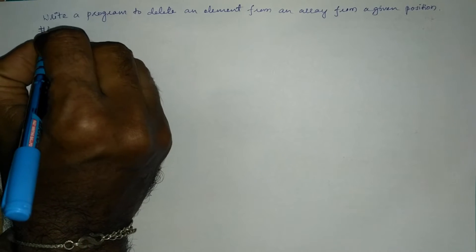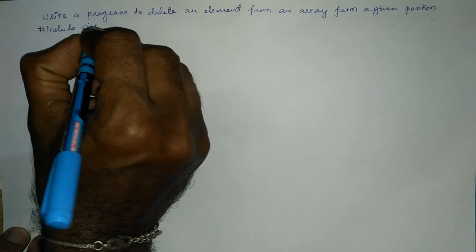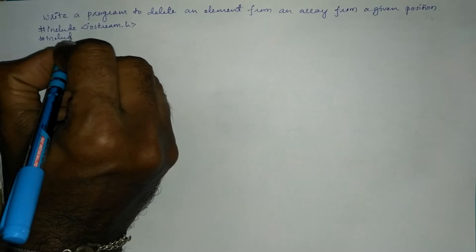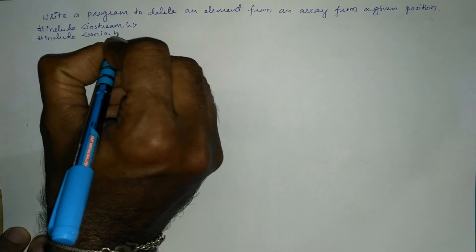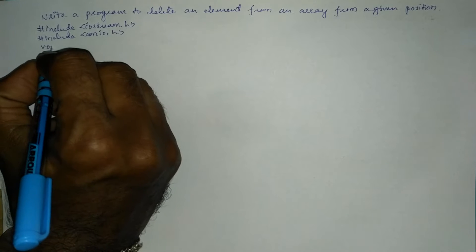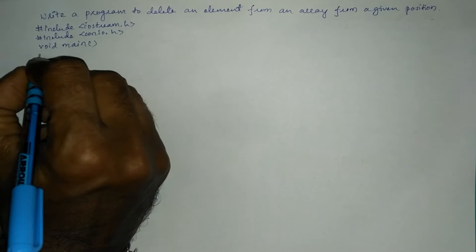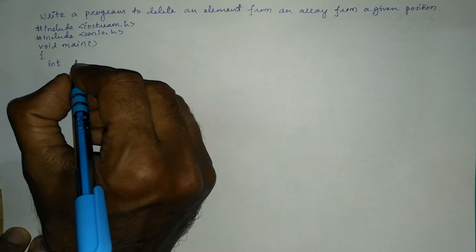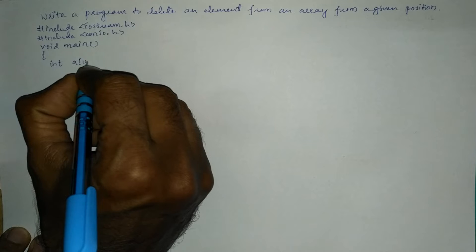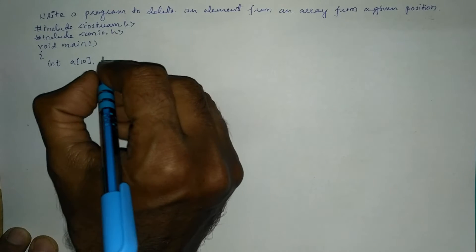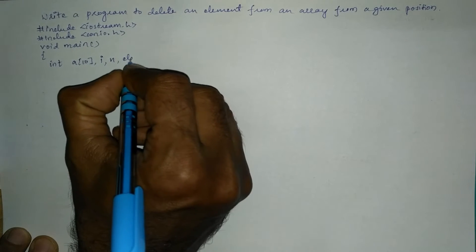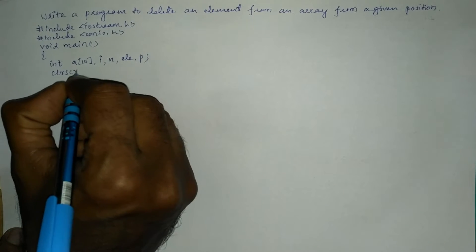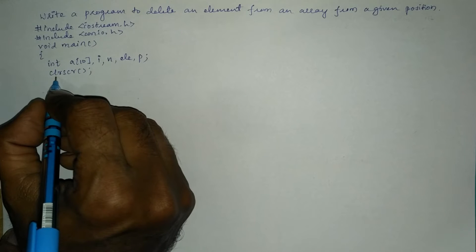Let us begin with the preprocessor directives: #include <iostream.h> and #include <conio.h>. Then we'll write void main with an opening curly brace. Here we are going to declare all the necessary variables: int a[10] for an array of size 10, then int i, n, element, and position p.